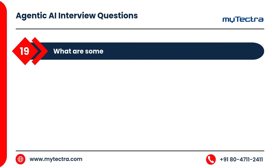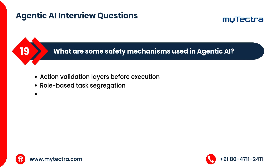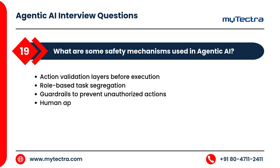What are some safety mechanisms used in agentic AI? Action validation layers before execution. Role-based task segregation. Guardrails to prevent unauthorized actions. Human approval checkpoints for sensitive operations.